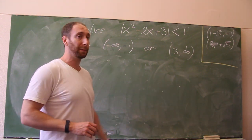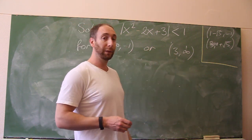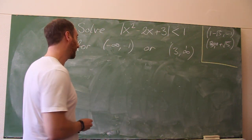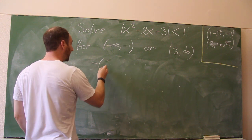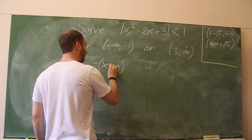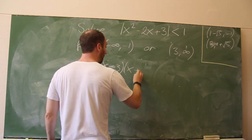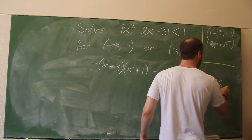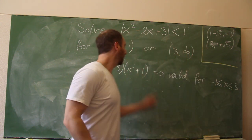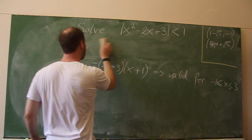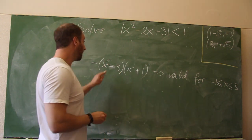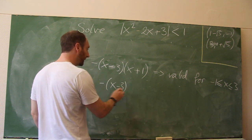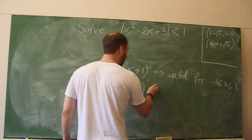We've looked at the first part of the piecewise function, defined in the outer two regions, and found solutions (1 − √5, −1) and (3, 1 + √5). Now we ask: what about the other definition? The other definition was minus (x − 3)(x + 1), valid for x between minus 1 and 3. The inequality we want to solve is −(x − 3)(x + 1) < 1.